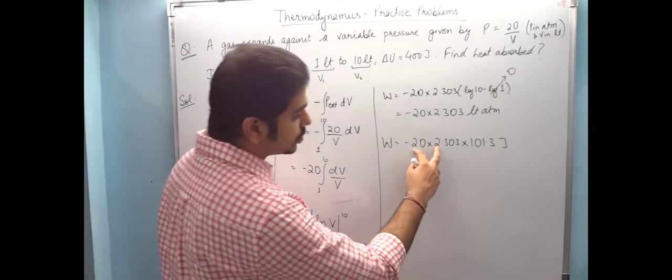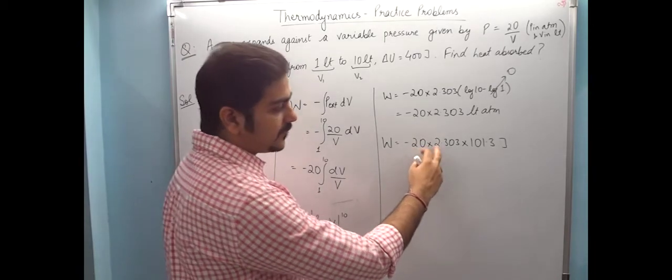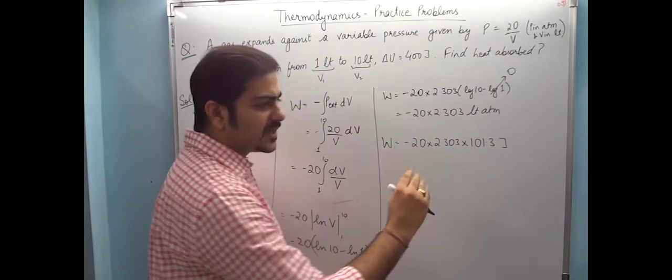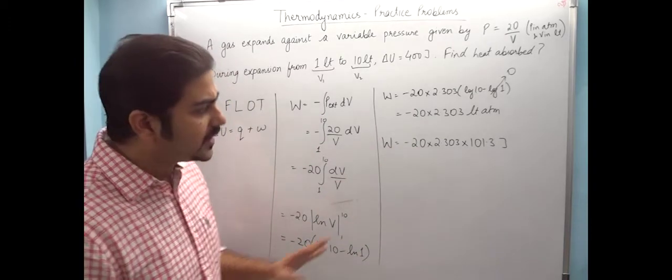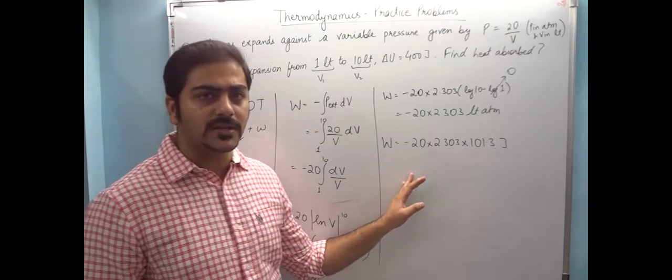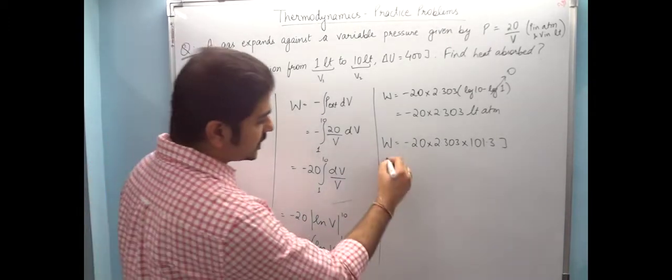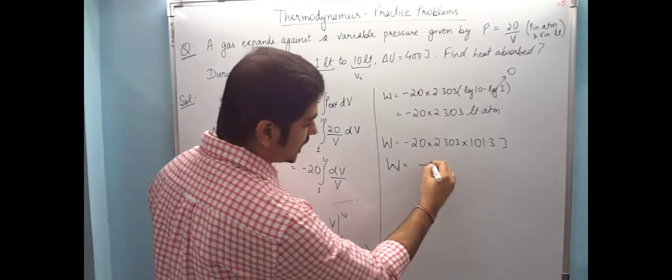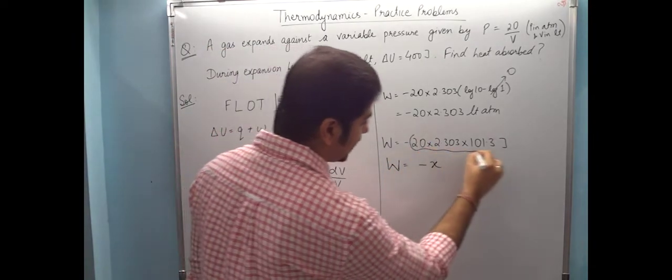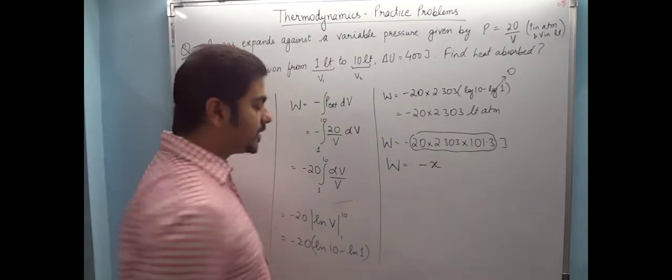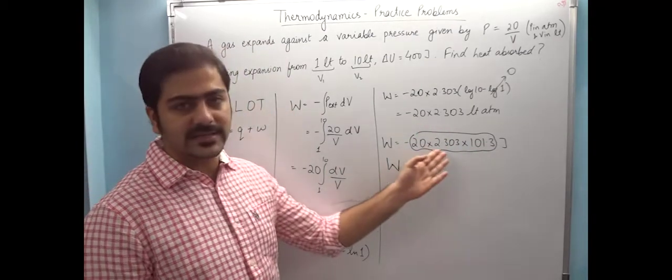So effectively 20 times 2 is 40, and 40 times 100 is 4000, so around 4200 will come. We don't need exact calculation right now. Let's take W equals minus X. This value I'm calling X.